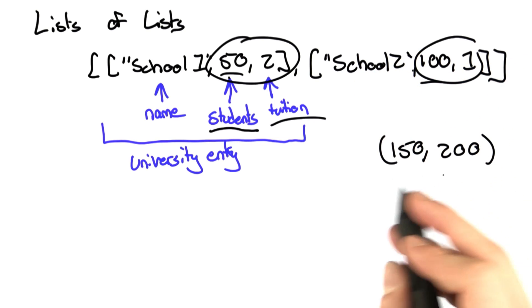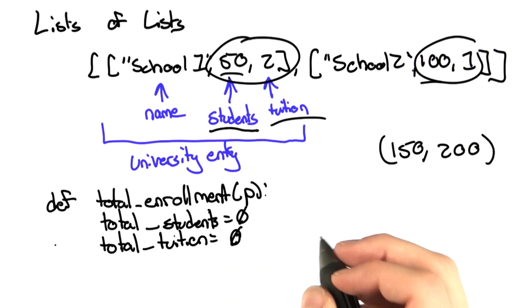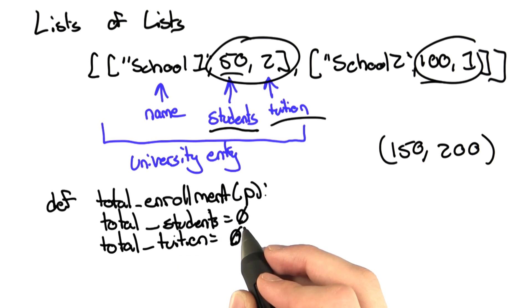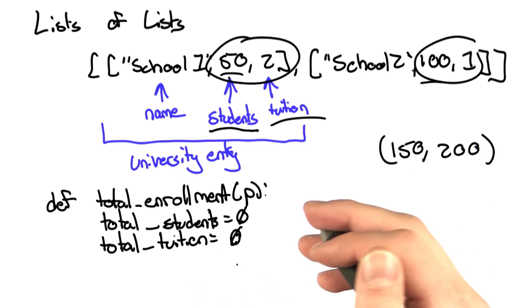So this will return both those values. Let's write the function that does that. I've declared the function. It takes in a list, and I've started my two sums: the number of students enrolled and the total tuition all of the students are paying.